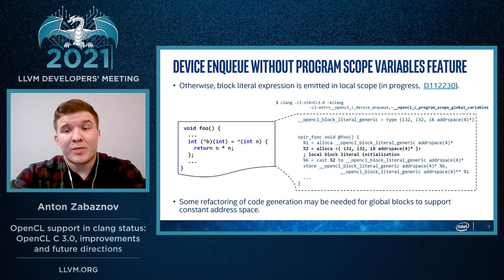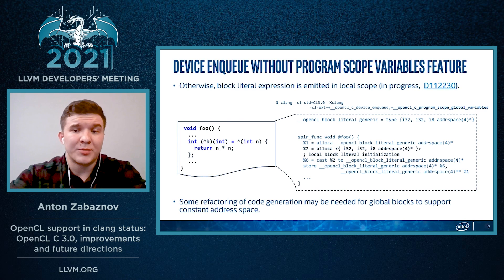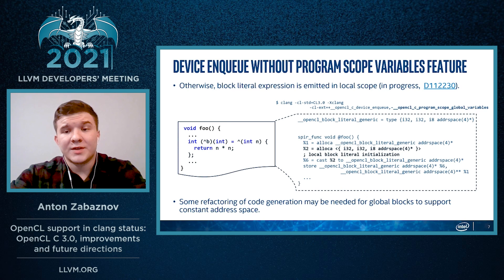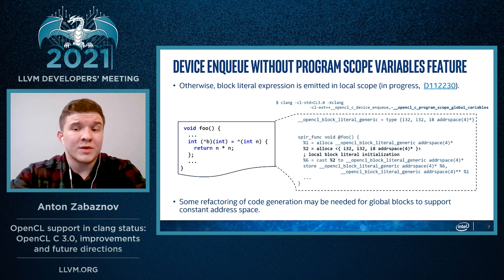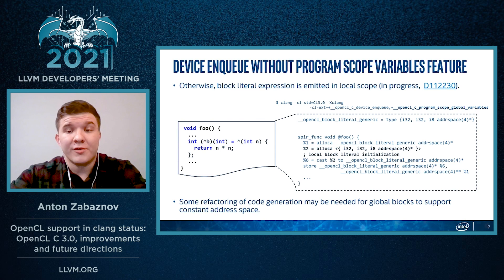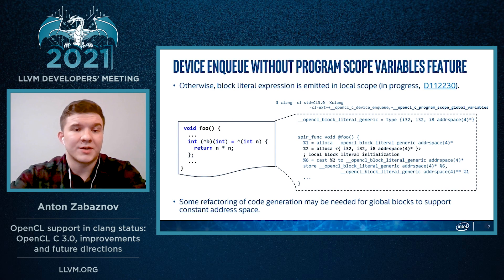It is now proposed to emit a block literal for blocks with no captures in local scope. That doesn't work for blocks which are declared in global scope, as they have to be initialized at the moment of declaration. For global blocks, some refactoring and code generation may be needed to support constant address space, but that's currently under discussion.